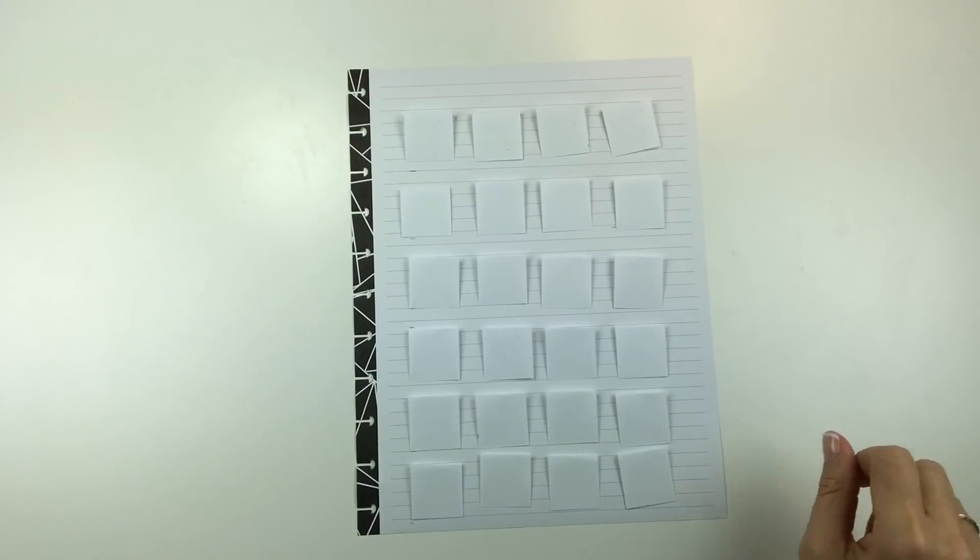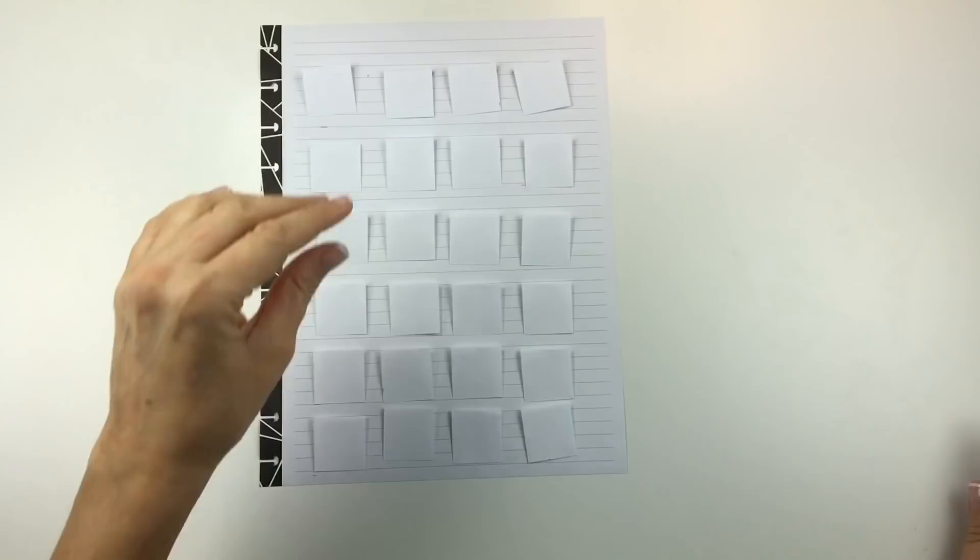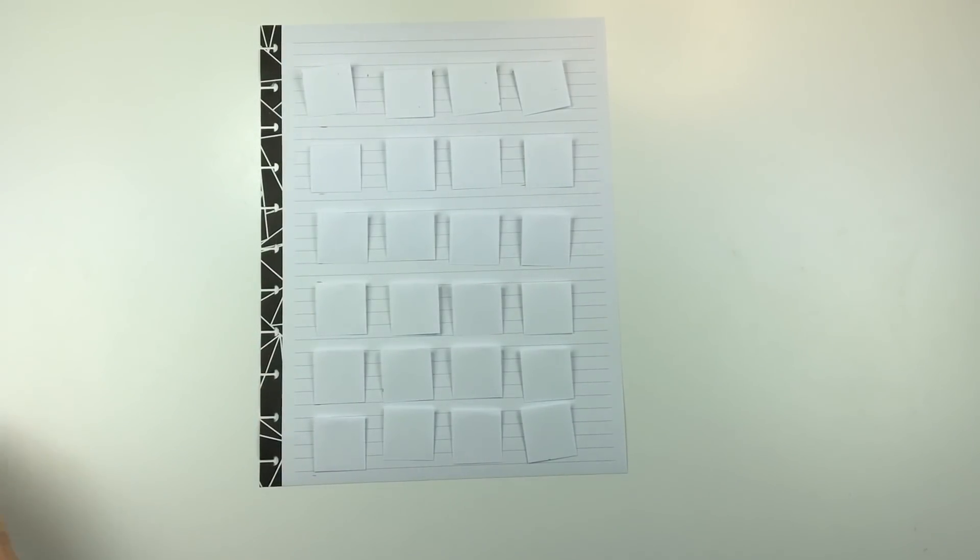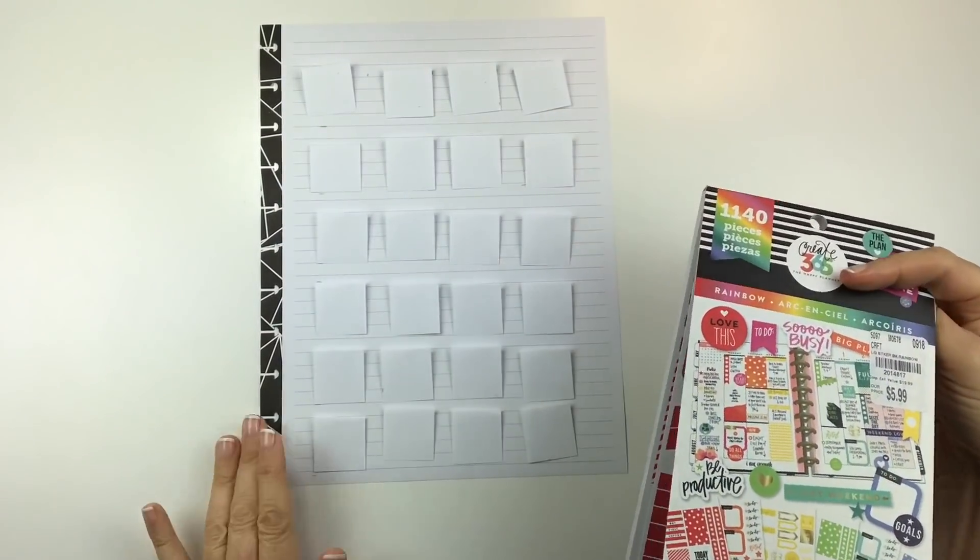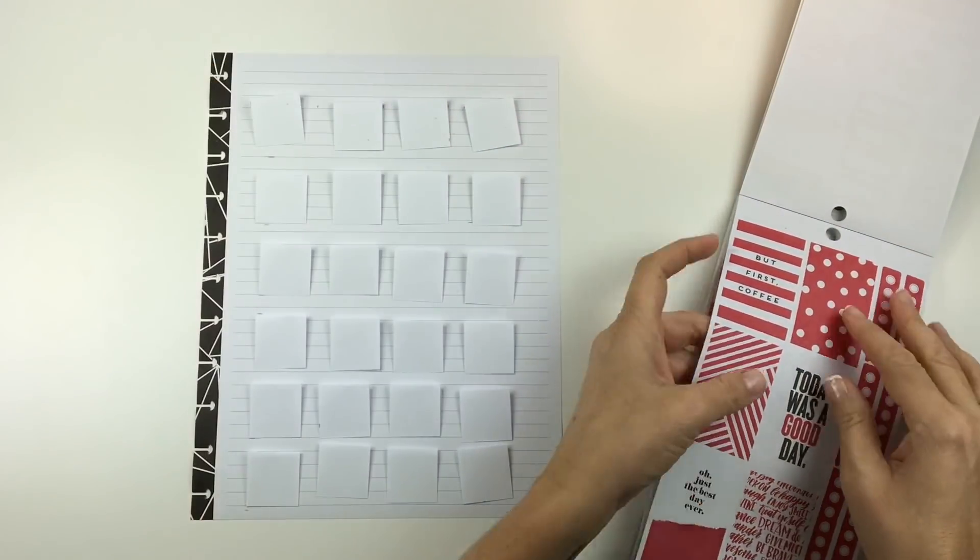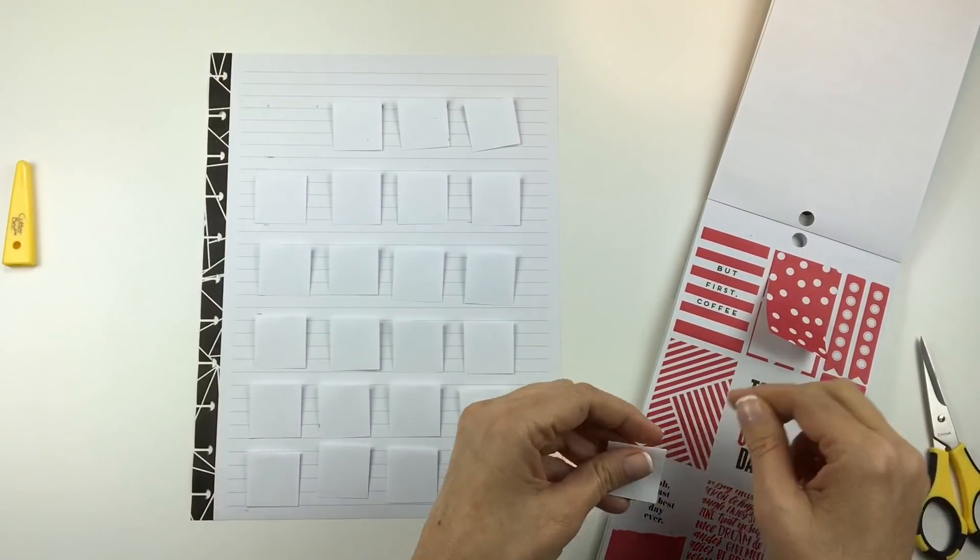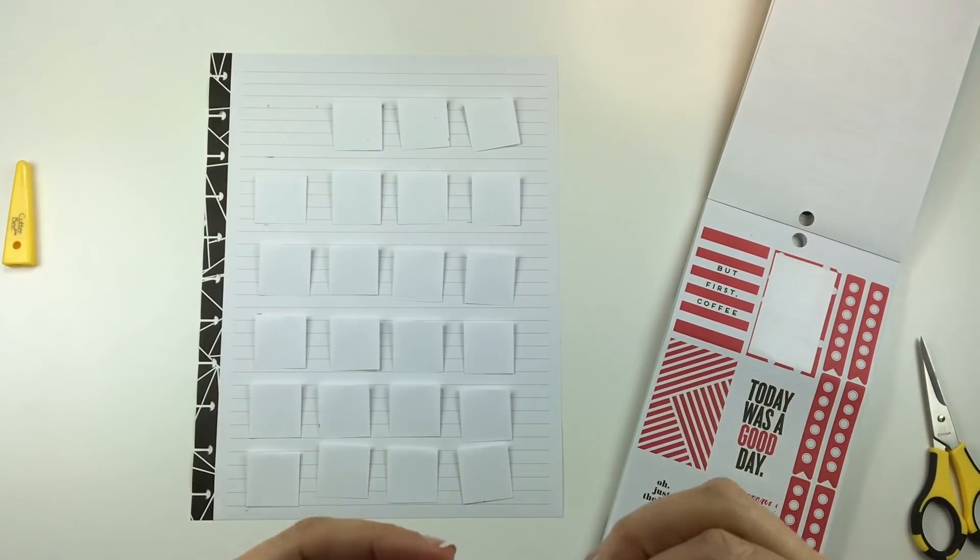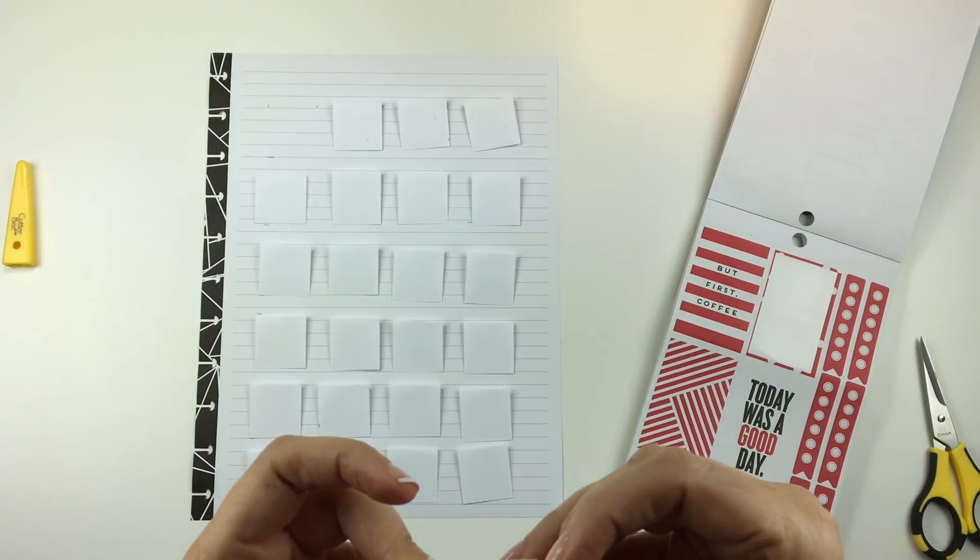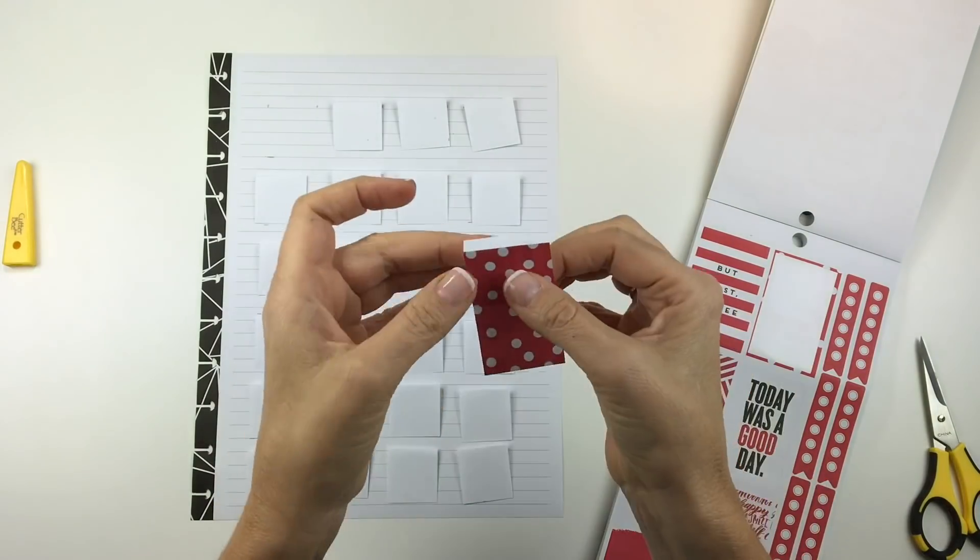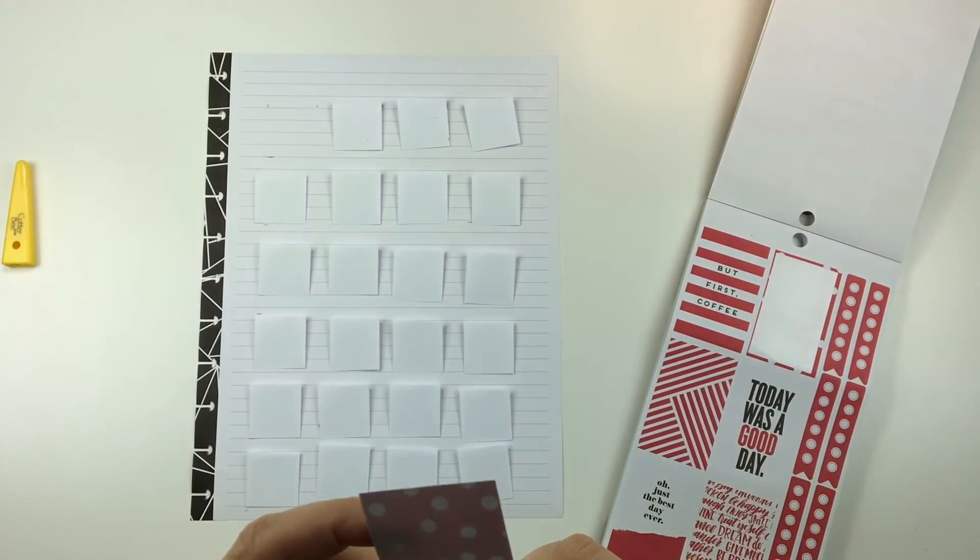So now I have 24 paper squares. I am going to decorate them before I glue them down on the page because it's going to be easier that way. So I decided I would take the rainbow sticker book. I have a bunch of these, like three or four of these books, so I had the stickers to use and I'm just going to cover up each of the squares with different red and green stickers.